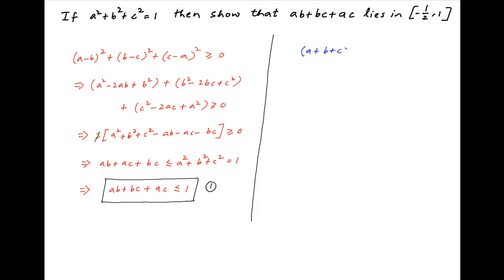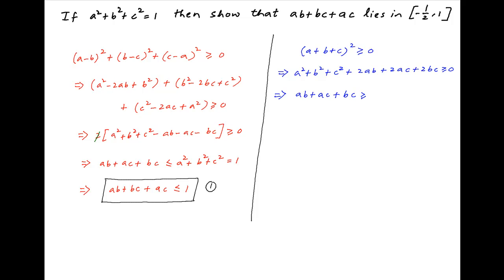Now note that the square of (a + b + c) is always greater than or equal to 0. Opening up the left hand side we get a² + b² + c² + 2ab + 2ac + 2bc is greater than or equal to 0. Therefore ab + ac + bc is greater than or equal to minus half.